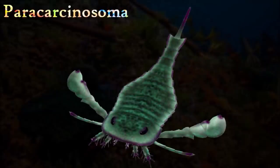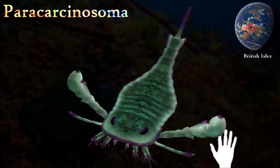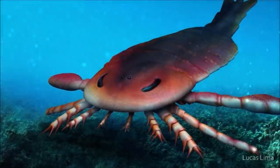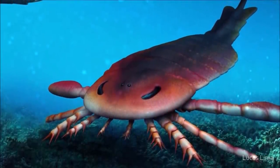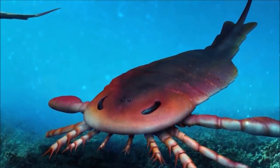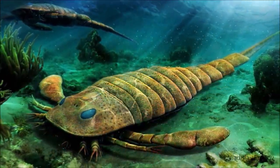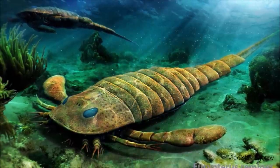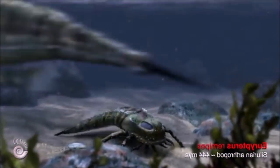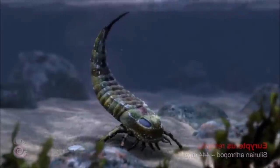Eurypterids, like Pterygotus, were scorpion-like animals, and the majority inhabited freshwater or brackish water. In some, the first pair of limbs ended in pincers armed with sharp pointed teeth on their inner edges. The animal's small head shield was roughly rectangular, with small eyes located close to the front; the mouth lay underneath, with the small chelicerae in front of it. It had four pairs of spiny walking legs, and the sixth, hindmost pair were swimming legs with paddle-like ends. The abdomen was divided into two parts: a broad oval pre-abdomen of seven segments and a narrower, nearly cylindrical post-abdomen with five segments, behind which was a pointed terminal segment called a telson.